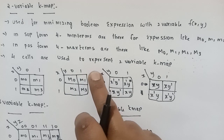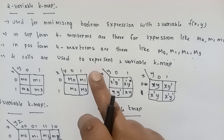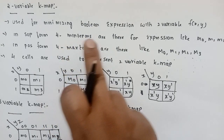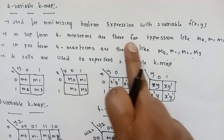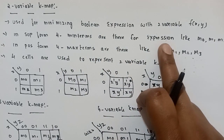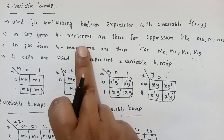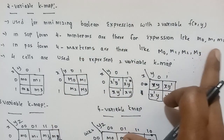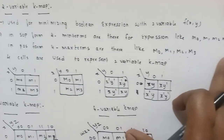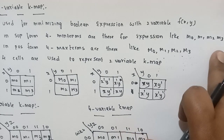There are two variables that we use, giving us four cells total. In sum of products form, four min terms are there: M0, M1, M2, M3. In products of sum form, max terms are capital M0, M1, M2, M3. Four cells are used to represent the two-variable K-map, with one side as the X variable and the other side as the Y variable.